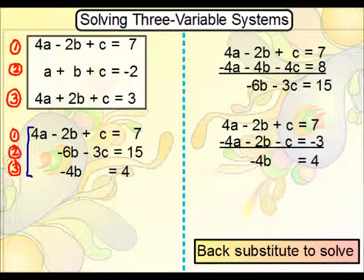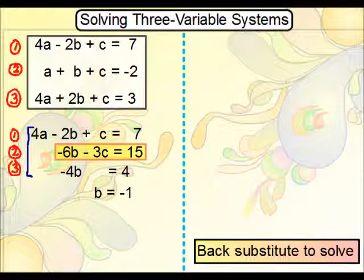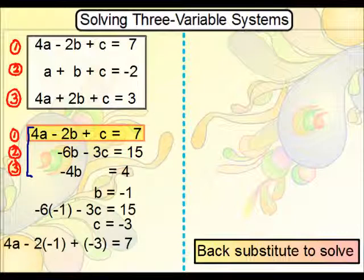That means now we can just skip right ahead to back substituting and then solving. So for this last one, you get b is equal to negative 1. For the second one, you plug in negative 1 in for b, solve for c, and you get negative 3. And for that first one, plugging in both b and c, then solve for a.